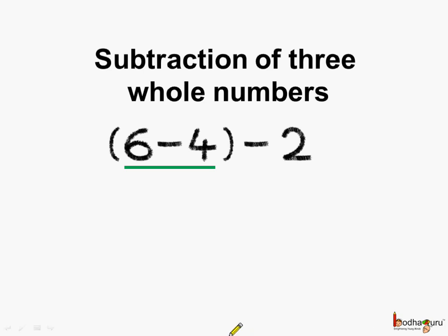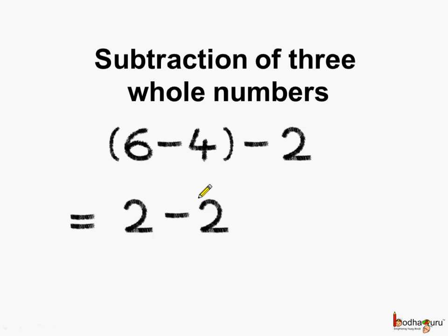Let us try to group 6 and 4 and subtract them first. So, 6 minus 4 is equal to 2, and we bring down minus 2. Now, we will do 2 minus 2, which is equal to 0.